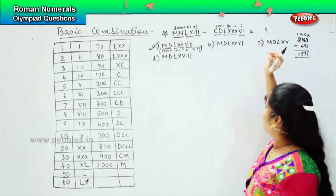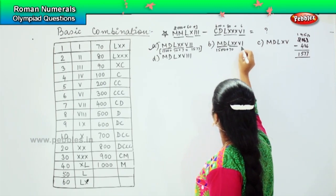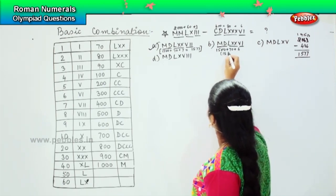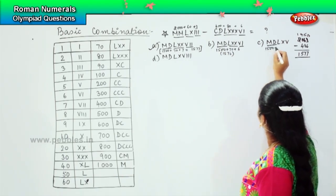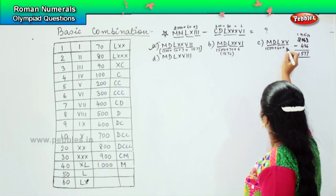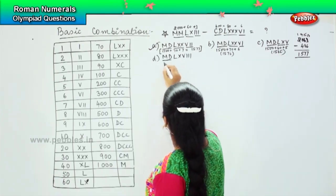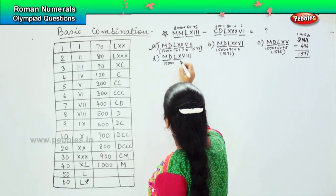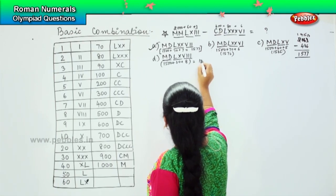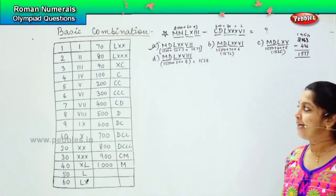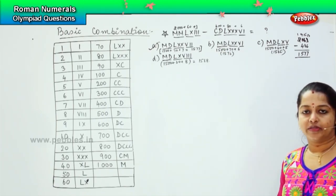Do you want to go through the other options? MD is 1500, L double X is 70, and this is 6, so which is 1576. This one: MD, 1500 plus LX is 60 plus 5, so 1565. This one: MD, 1500 plus LX is 60, and this is 8, so 1568. So if you break the Roman numerals according to the terms given, it's easy to solve the sum.